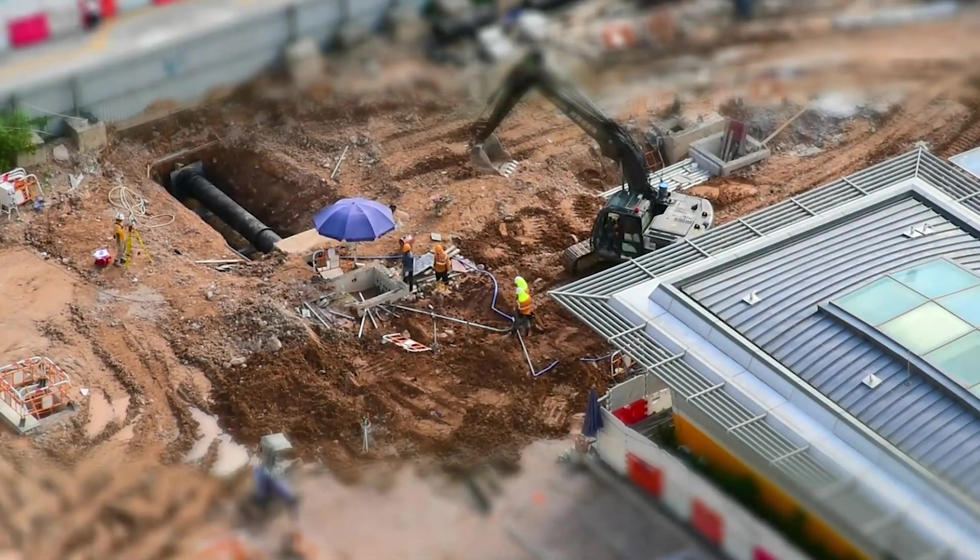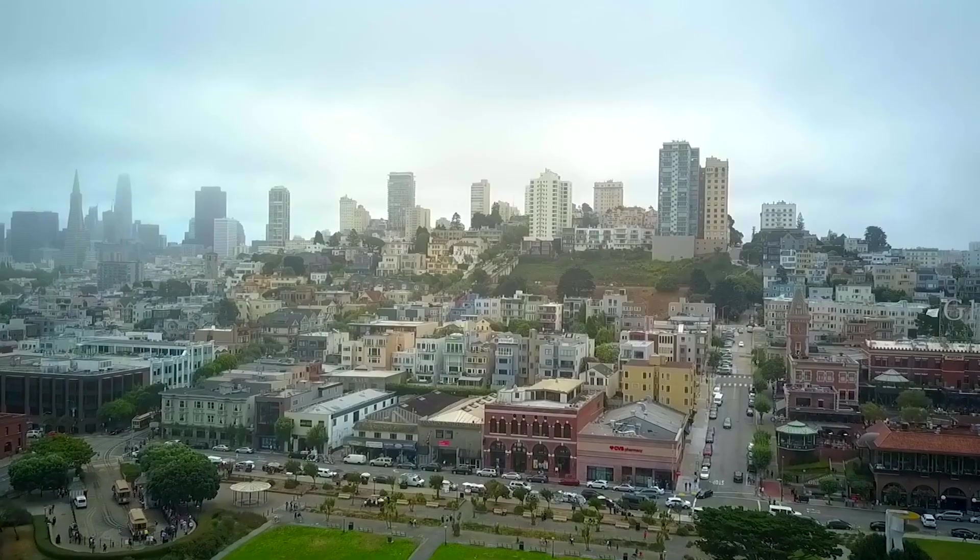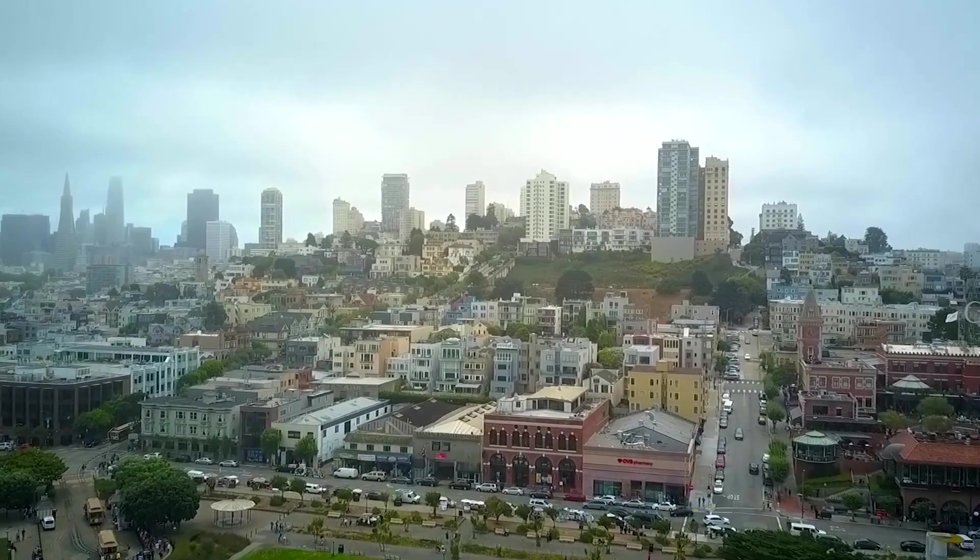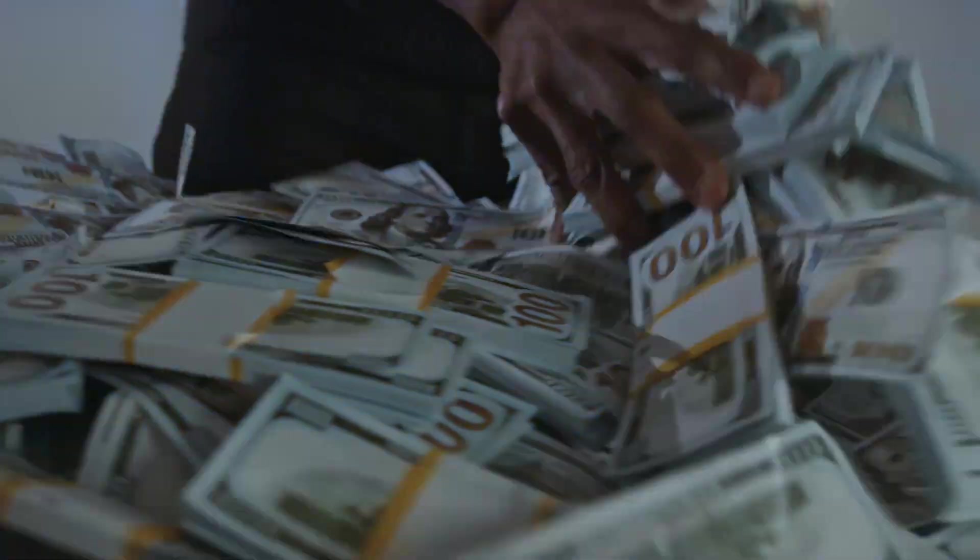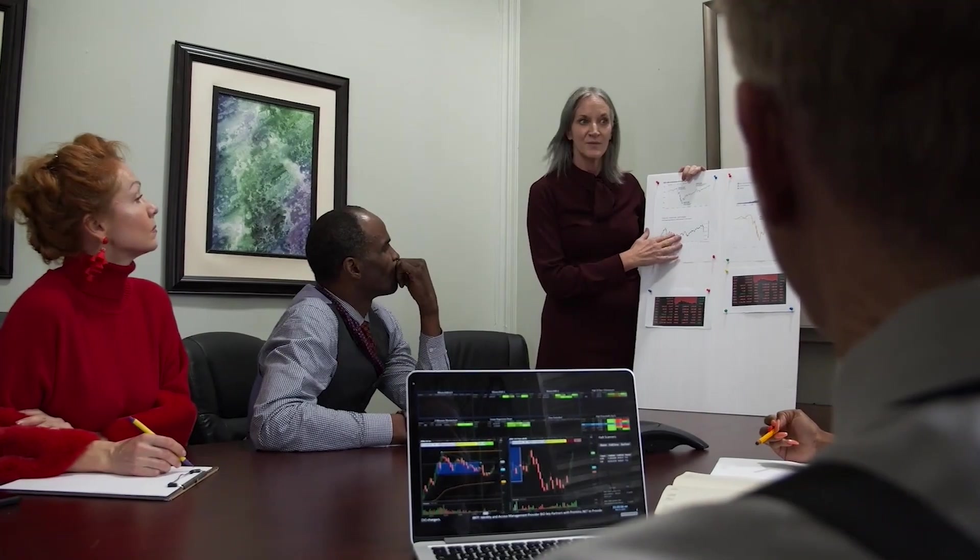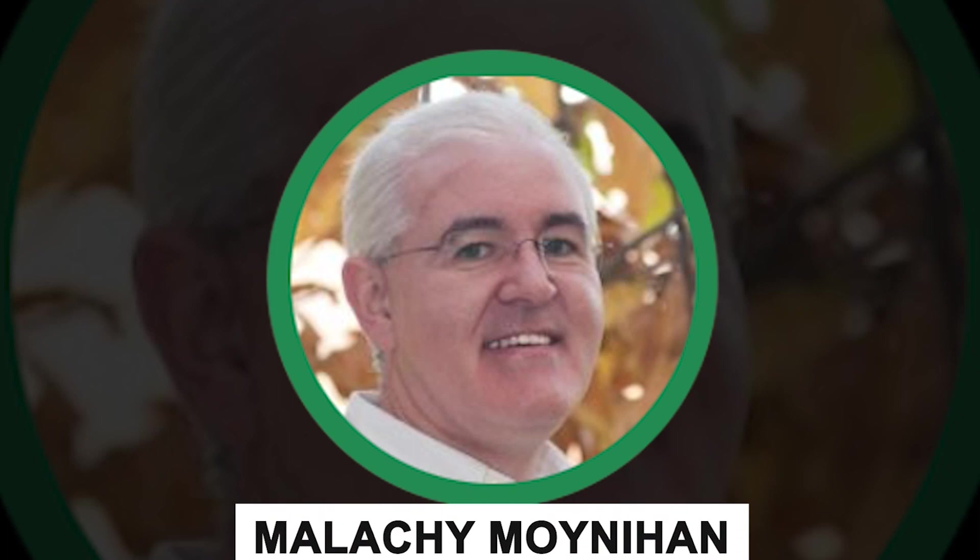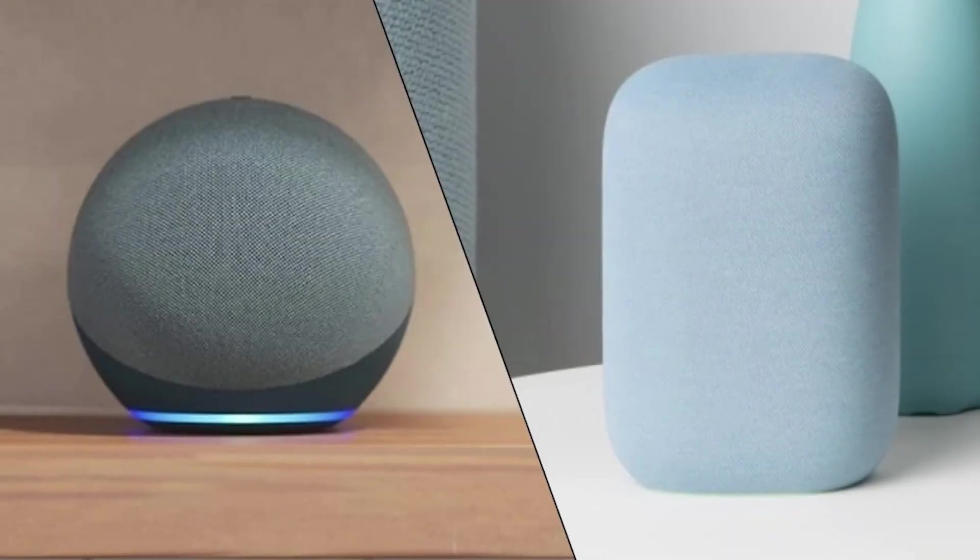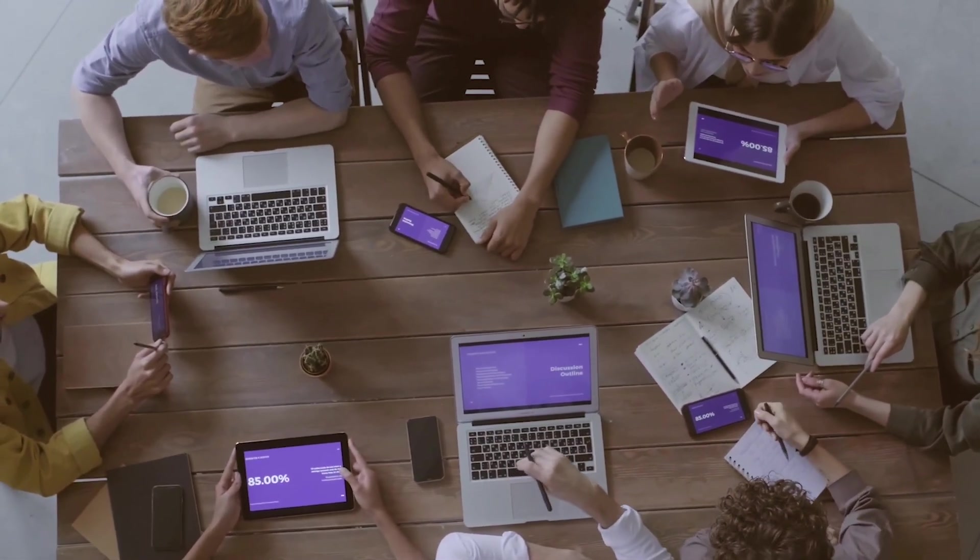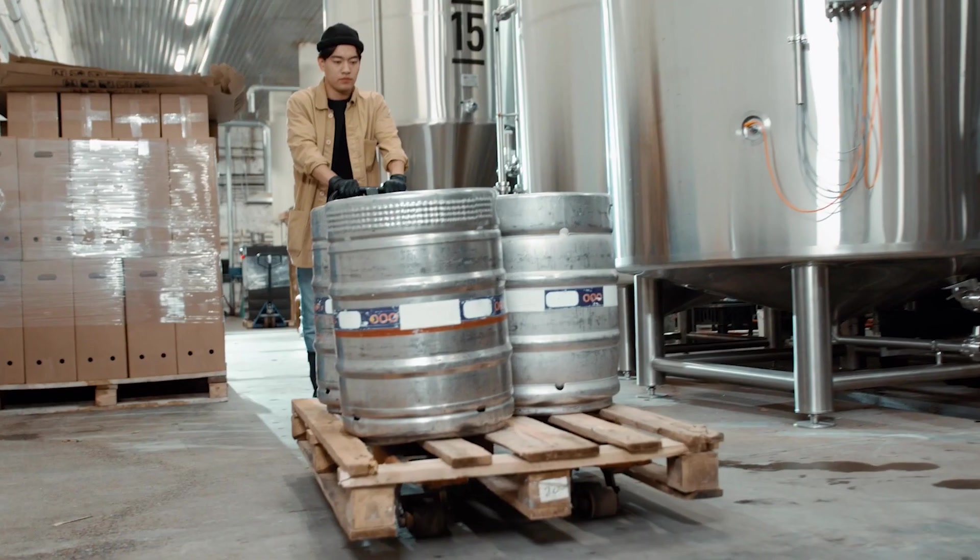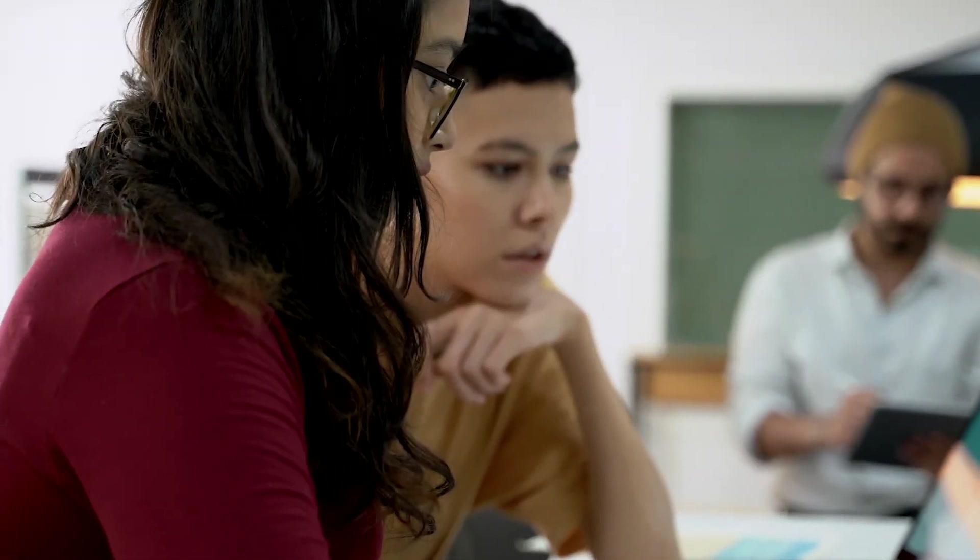Relocating the headquarters to the bustling hub of innovation, Silicon Valley, proved to be a strategic move for Doug. This decision not only placed him near a wealth of resources, but also attracted top-tier talent to his team. Among the notable individuals who joined his ranks was Malachi Moynihan, renowned for his exceptional work on the Amazon Echo. Such high-profile additions to Doug's team sparked intrigue and even sparked rumors of potentially enlisting the design expertise of the acclaimed Apple designer, Johnny Ive.